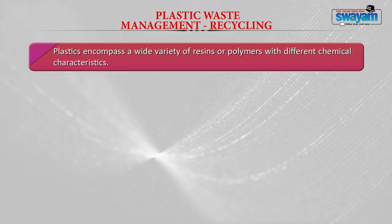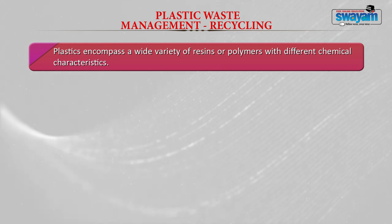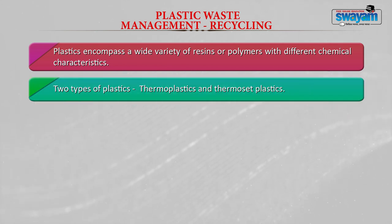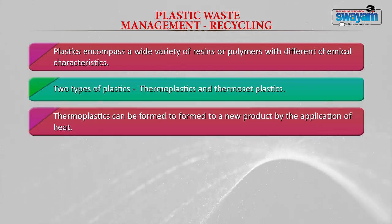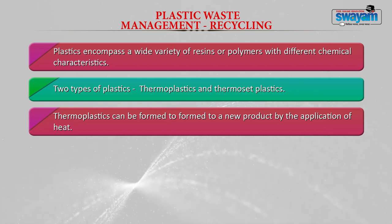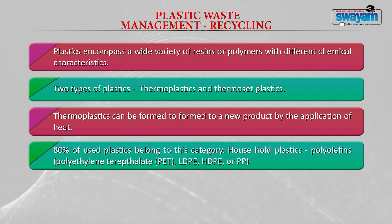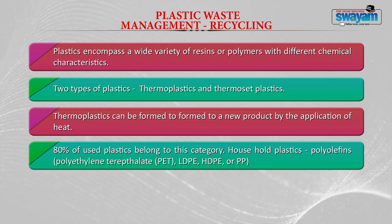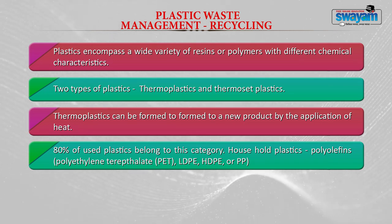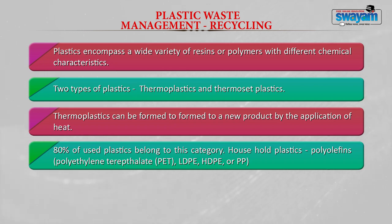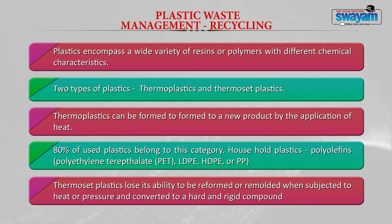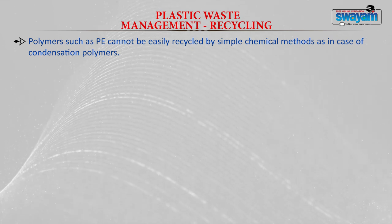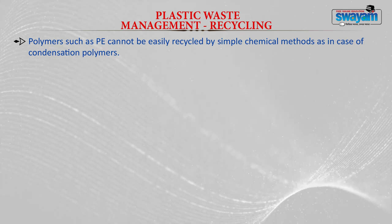Plastic is made up of a wide variety of resins or polymers with different chemical characteristics, including thermoplastics and thermoset plastics. Thermoplastics can form new products by application of heat, and 80% of plastics are thermoplastics. Household plastics like polyolefins, polyethylene, LDPE, polyethylene terephthalate, and polypropylene are all examples of thermoplastics. Thermoset plastics lose their ability when heated — they cannot be remolded due to heat or pressure and become very rigid and hard. Polymers like polyethylene cannot be easily recycled by simple chemical methods like condensation polymers.